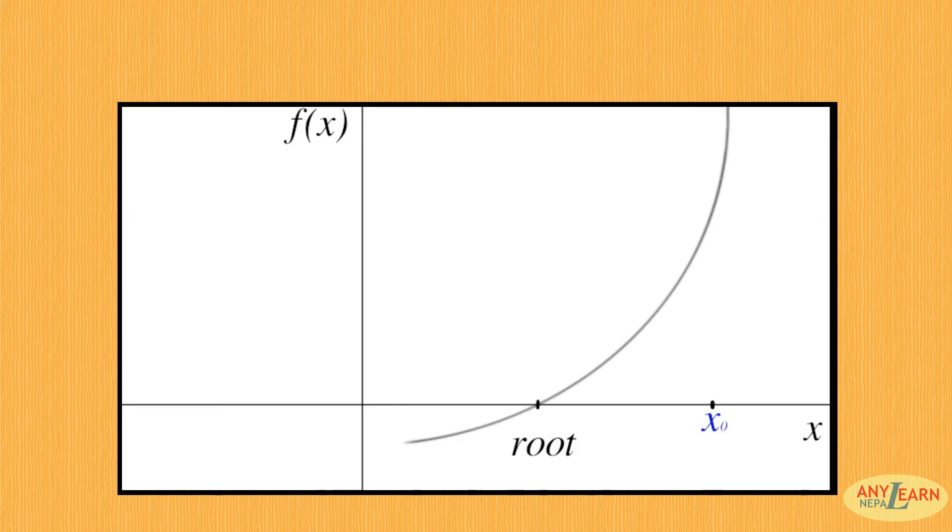Now let's approximate value x0 as an approximated root. Then we see the corresponding point (x0, f(x0)) on the curve. Now we draw a tangent to the curve at that point. This tangent crosses the x-axis at a point (x1, 0), where x1 is another close approximation to the root.